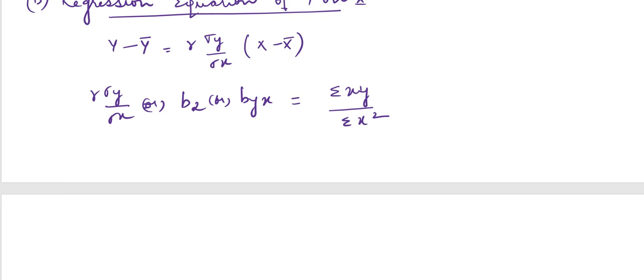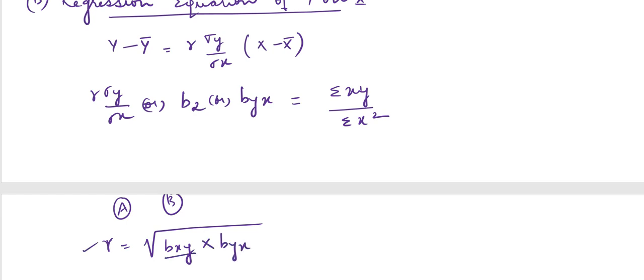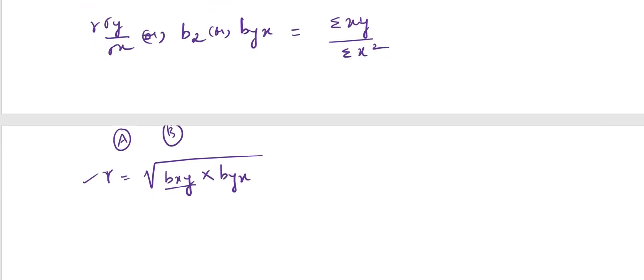In case you are asked to find out the correlation value: since you have found the regression coefficients for x on y and y on x, you can simply find r as the square root of the product of both regression coefficients. Sometimes they may ask this for two marks, so you need to compute it this way.